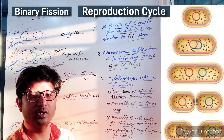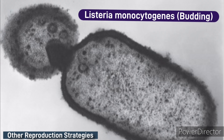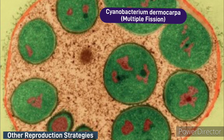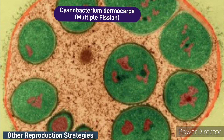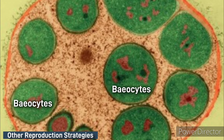Coming to other reproduction strategies: in the first picture, Listeria monocytogenes — the mother cell is giving birth to a progeny cell with the help of a bud. This budding system is commonly seen in fungi, so it is a eukaryotic characteristic, but you can see it in bacteria too. The second example is Cyanobacteria, specifically Dermocarpa, which undergoes multiple fission — within the cell wall there are multiple progeny cells, each individually called baeocytes.